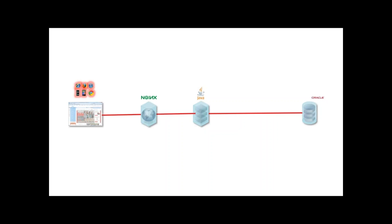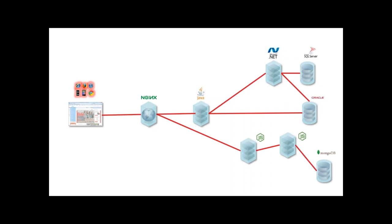We are a bigger company thinking about multiple teams, so it can happen that we have another part of our application based on .NET using SQL Server. As we already have some data, it might sometimes be convenient to do a hack — which is not always good. Nginx handles some static content, and Node.js is quite popular right now, so let's assume we have two Node.js nodes doing some MongoDB stuff.